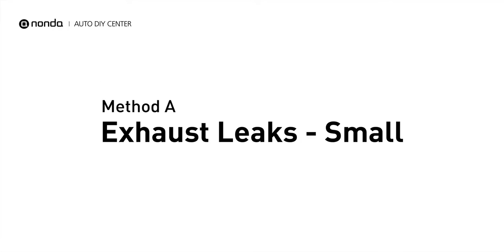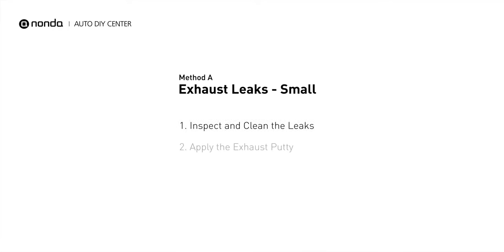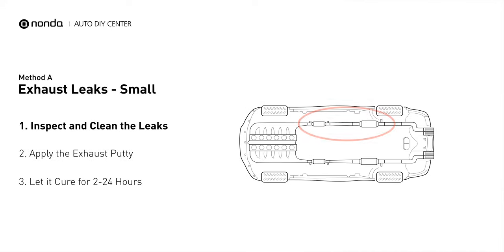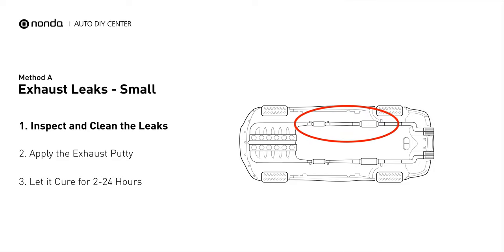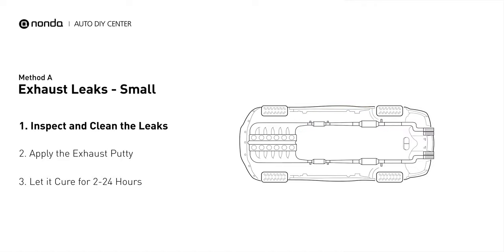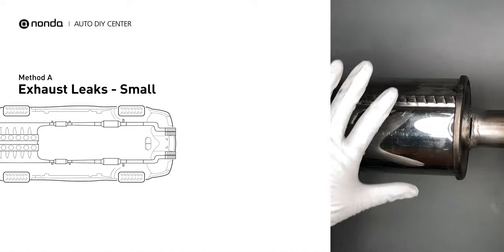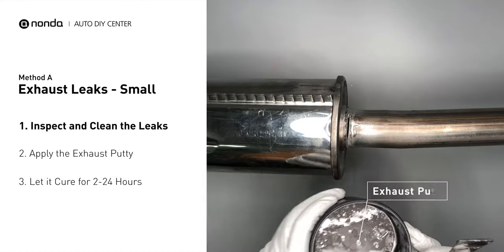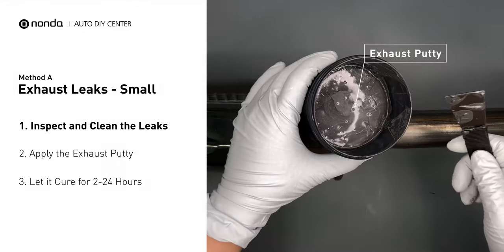Method A: Exhaust Leaks. The exhaust system begins at the engine combustion chambers and runs along the undercarriage of the vehicle, eventually ending with the visible tailpipe. If you have a small leak, get some exhaust putty to seal it up.